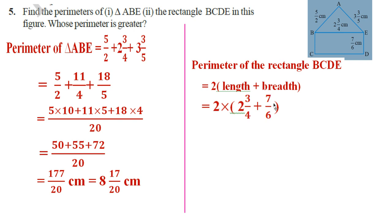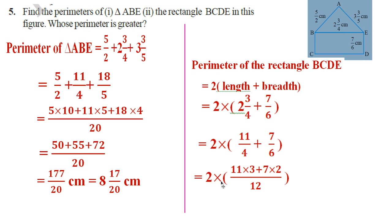We get 2 × (2 3/4 + 7/6). Now 2 3/4 is 11/4, so we can write 2 × (11/4 + 7/6). The LCM of 4 and 6 is 12. Adding 11/4 + 7/6: 4 goes 3 times in 12 so 11 × 3, and 6 goes 2 times in 12 so 7 × 2.